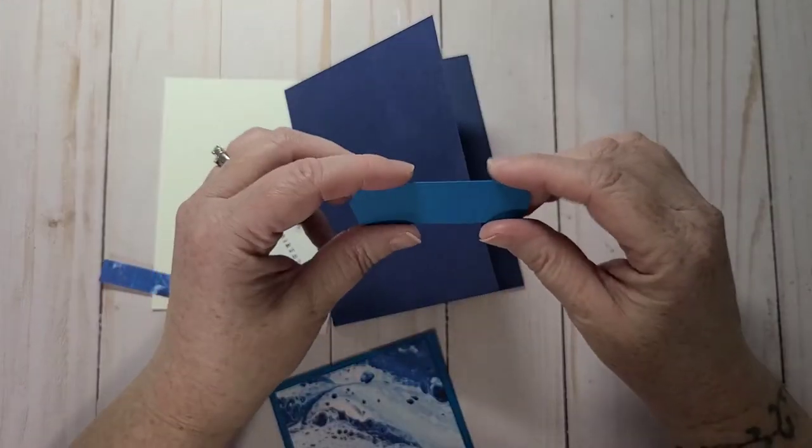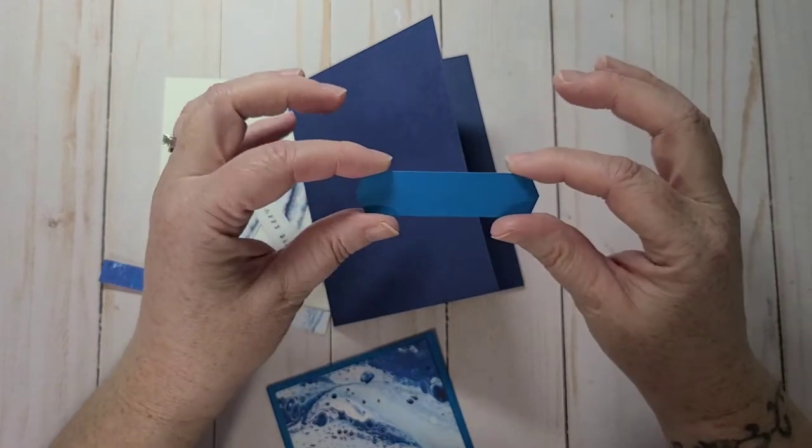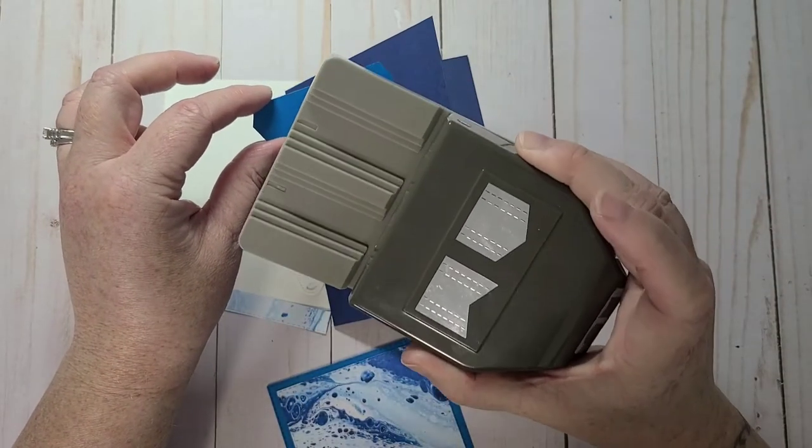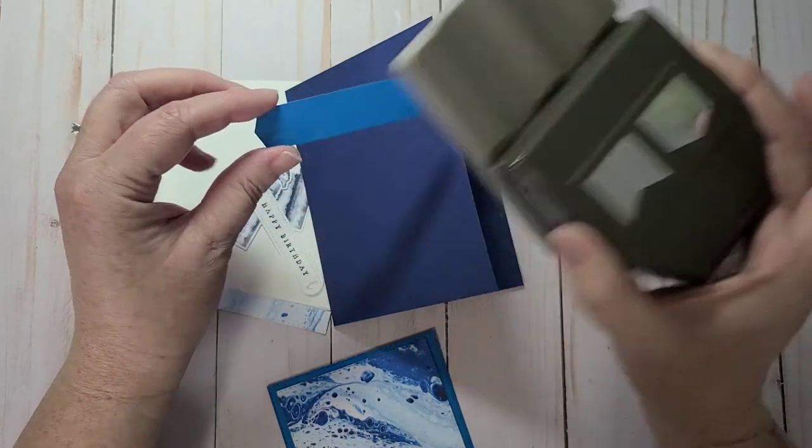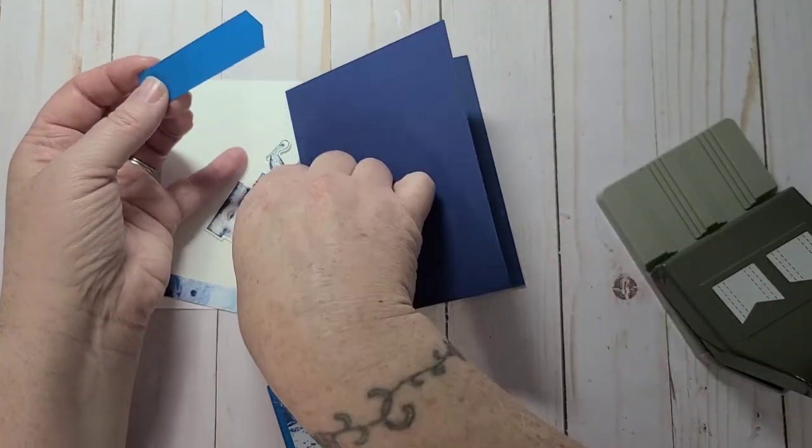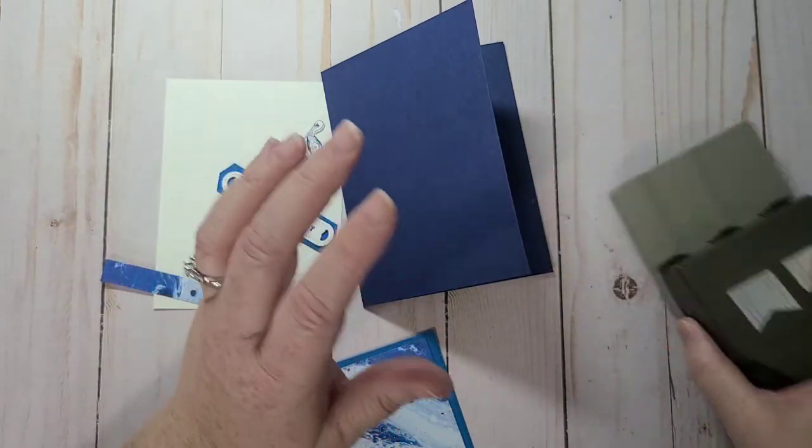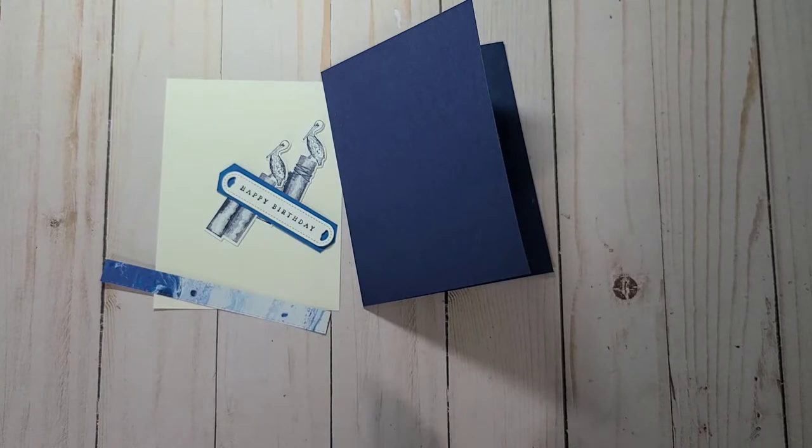And then I took a three quarters of an inch high piece of Pacific Point. And I brought in my banners pick a punch, which is also carrying over. And I just cut that down just a little bit longer than my sentiment. And that's going to layer on top like that. So those are all my pieces.